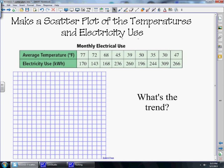Finally, we need to know how to make a scatterplot. The first thing we're going to do is make our x and y-axis. I'm going to make the L shape. On the x-axis, we're going to have the temperature. And then on the y-axis, we're going to have electric use, which is measured in kilowatt hours.